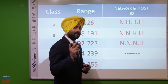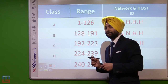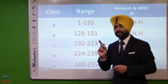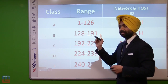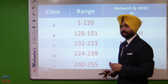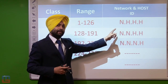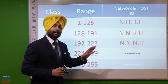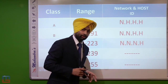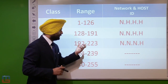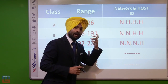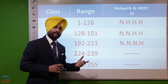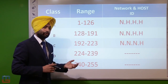The five classes are A, B, C, D, and E. Class A ranges from 1 to 126 — it has one network ID and three host IDs. Class B ranges from 128 to 191, with two network IDs and two host IDs. Class C ranges from 192 to 223, with three network IDs and one host ID. Class D ranges from 224 to 239, and Class E ranges from 240 to 255.